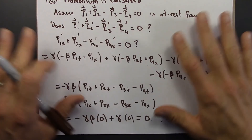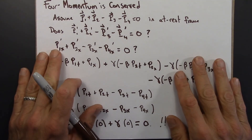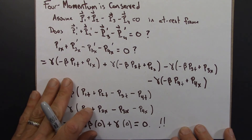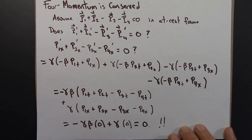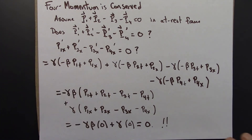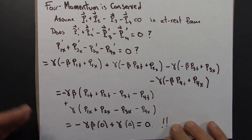All this theorizing is great — it fits together really nicely. But the bottom line for science is experiment. Conservation of relativistic momentum has been tested again and again in particle accelerators, where collisions like this happen at fractions of the speed of light. Every single time, 4-momentum has been conserved. So the conservation of 4-momentum is now taken as one of the absolute foundations of modern physics.